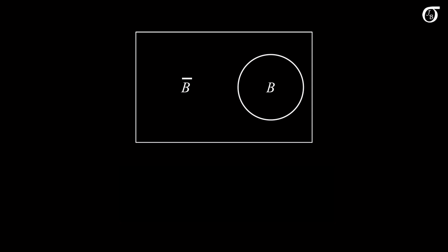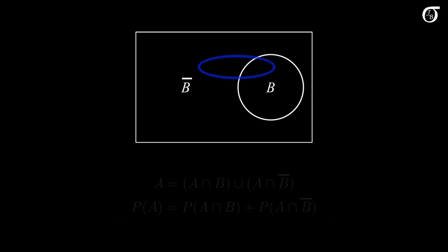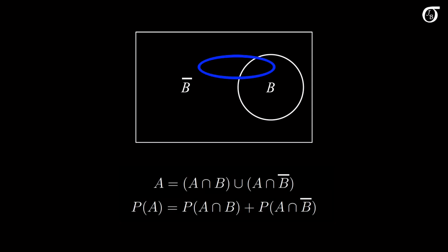And if there are only two B's, in which case we typically refer to them as B and B complement, then the probability of A simplifies to this. This is a useful little identity that you should keep in mind.